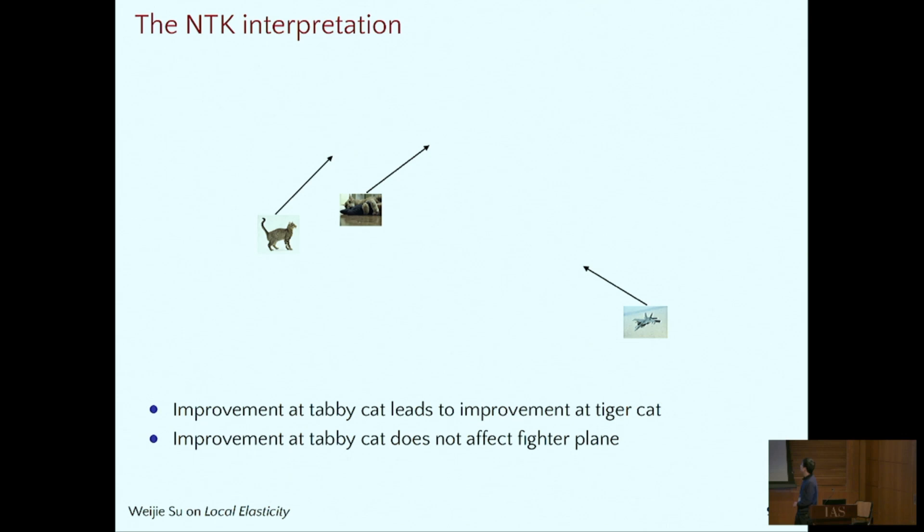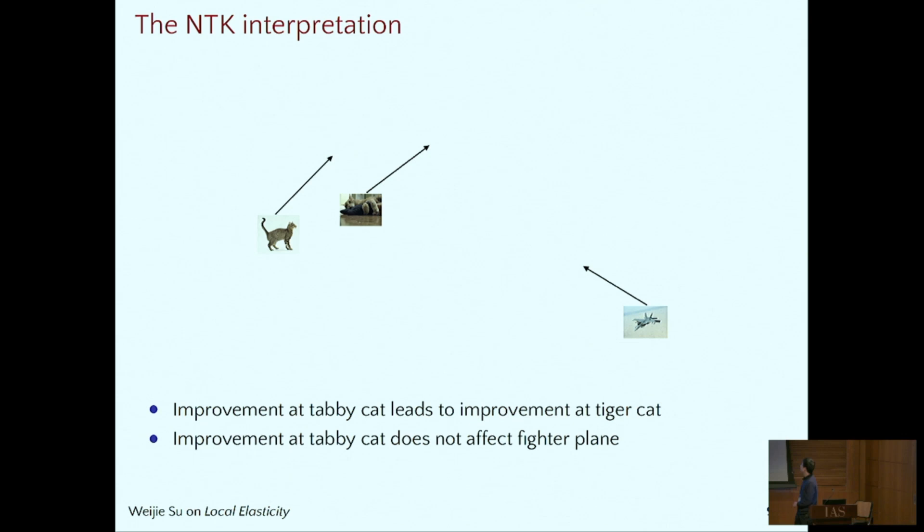The neural tangent kernel interpretation is profound in the following sense. We believe that the two cats, the tangent, the vector, are almost parallel to each other so that their inner product is huge. And whereas the vector is almost perpendicular to the cat here. That's why the change here does not affect too much as a plane. Roughly speaking, if I understand tabby cat more, it will also improve my understanding of the tiger cat, which is not the case for the plane.